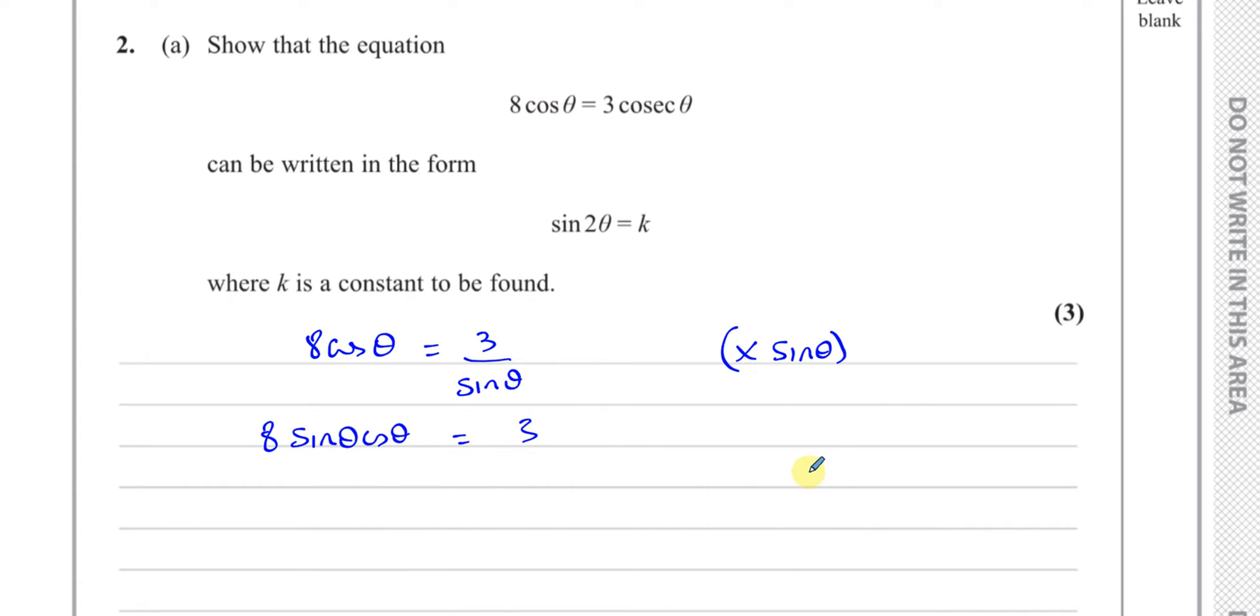Now one of the identities that we should know, which is not given to us in the formula book, we should know is that the sine of 2a equals 2 times sine a cosine a. Now if we forget this identity, then there is an identity in the formula book which is given as sine a plus or minus b equals sine a times cosine b plus or minus cosine a times sine b.